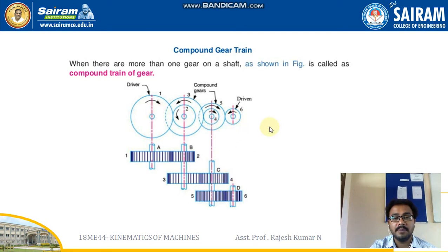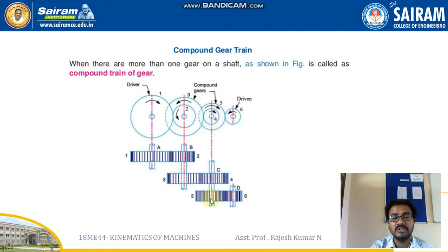In this example, gear 1 has only one shaft. Gear 2 and gear 3 are mounted on a common shaft. Next, gear 4 and gear 5 are again mounted on a common shaft, and gear 6 is mounted on a single shaft.